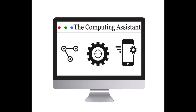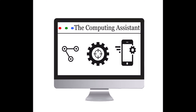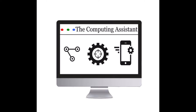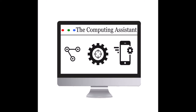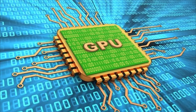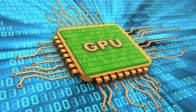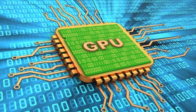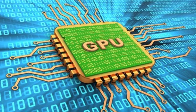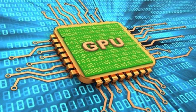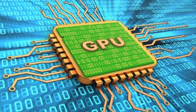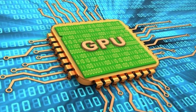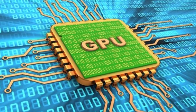Welcome friends to another video from the Computing Assistant. Today we are going to talk about GPUs or the Graphics Processing Unit. A GPU is a specialized electronic circuit chip that is designed to rapidly manipulate data to speed up the display of graphics on a visual unit such as a monitor, in many applications but especially games.